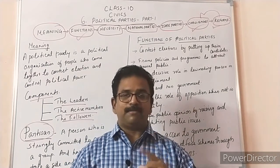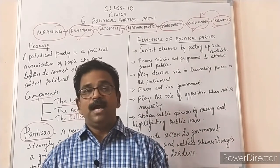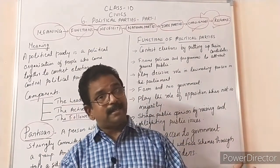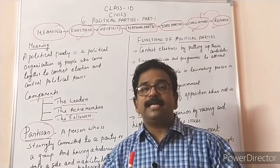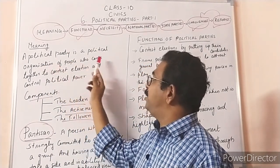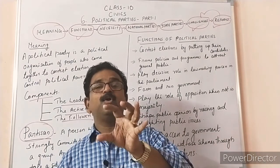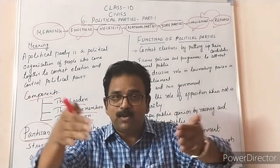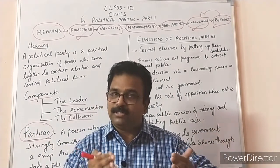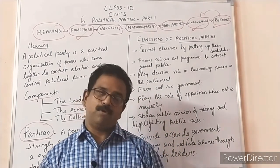First of all, we are going to discuss the meaning of political parties. What is a political party? A political party is a political organization — a group of people who come together and contest elections, and after that attain power. Simply: a political party is a political organization of people who come together to contest elections and control political power. Once they form the party, all members come together, contest the election, and then they have to handle that power as well.